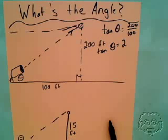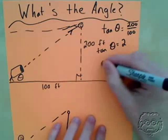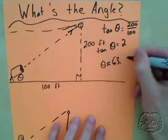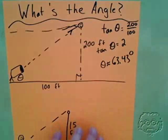And then, I would use the arctangent function on my calculator to figure out that his angle is just about 63.43 degrees. Alright?